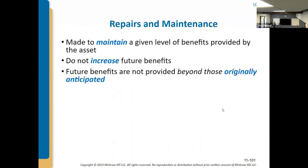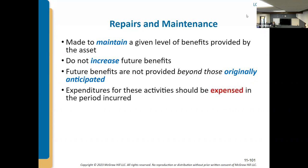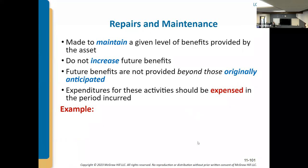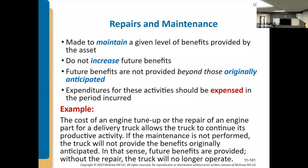Repairs and maintenance typically involve maintaining a given level of benefits without increasing future benefits. Expenditures below your threshold or that are just maintaining performance go to repairs and maintenance and are expensed in the period incurred. For example, spending $500 to replace parts in equipment to maintain current performance levels would be expensed as repairs and maintenance. Engine tune-ups, oil changes, and similar items are all included.